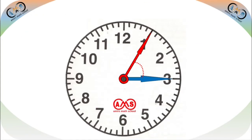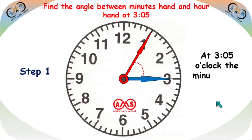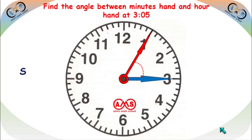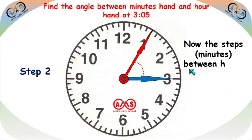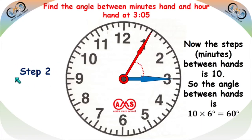Let's see some examples. Find the angle between the hour hand and the minute hand at 3:05. At 3:05, the minute hand is at 1 and the hour hand is at 3 — that's Step 1. Step 2: the minutes between the hands is 10. We count 1 through 10 steps. Each step is 6 degrees, so the angle is 10 times 6, which is 60 degrees.